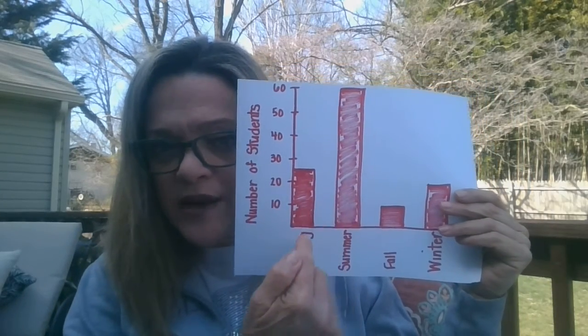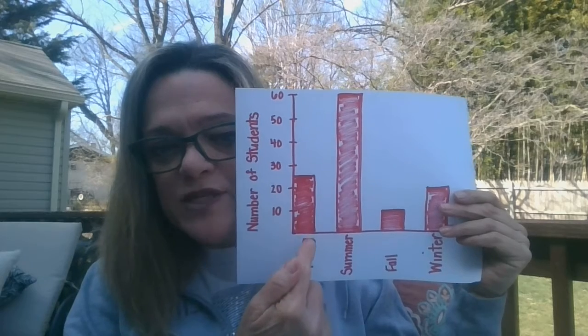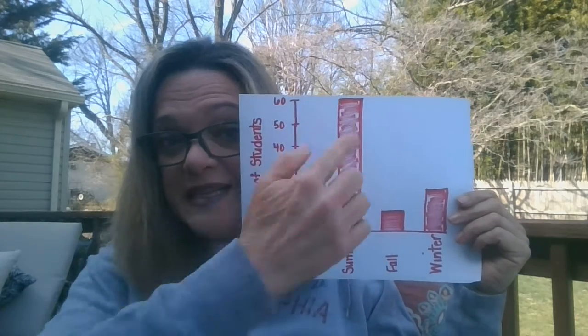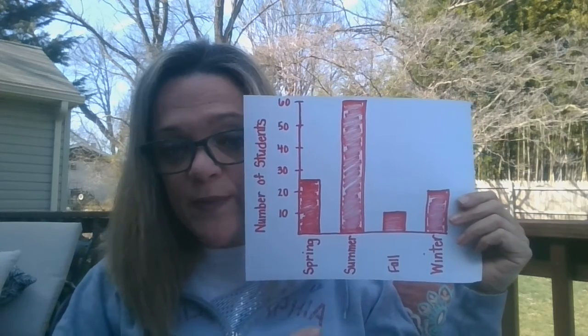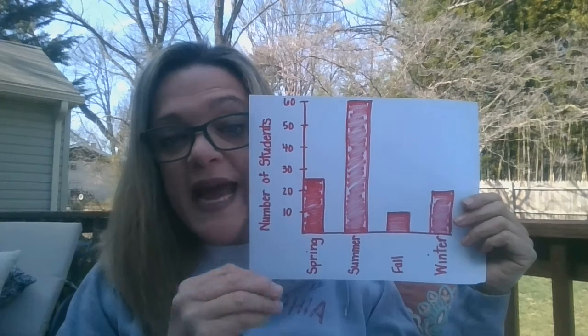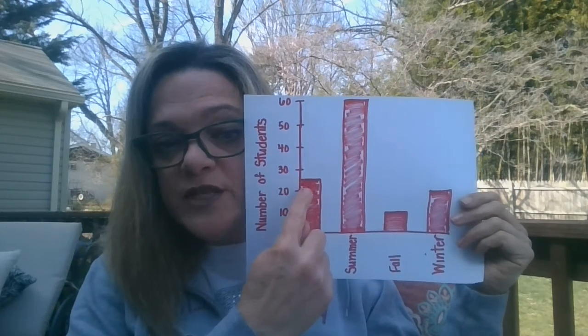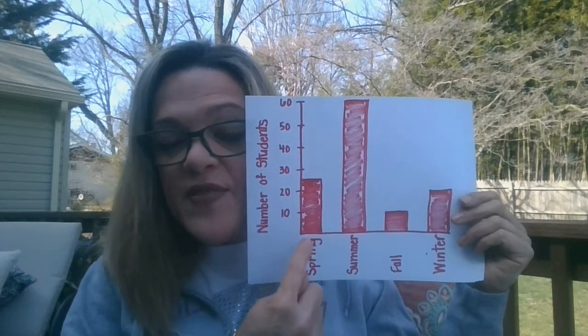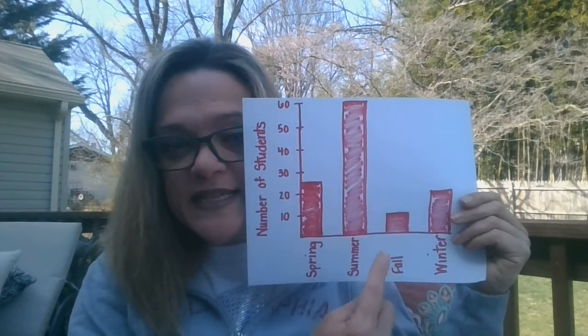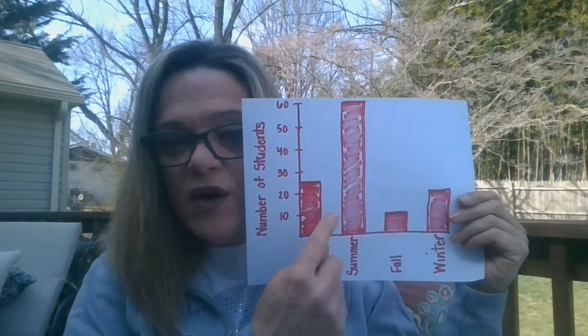When I made my bar graph, I decided that 60 was a pretty big number. So what I did was I made my squares into groups of 10 students, because making 60 — I would have needed a really big piece of graph paper. So I started with spring. Spring was not an even number — it was half. So right in between 20 and 30 is where 25 would be, and that's where I made the bar for my graph. For summer, I went all the way up to 60.